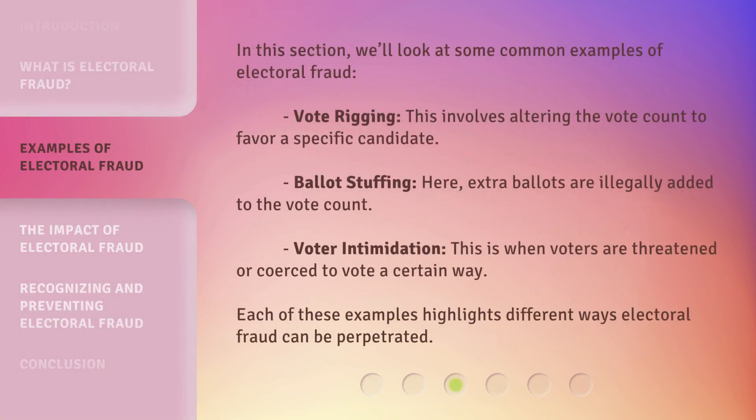In this section, we'll look at some common examples of electoral fraud. Vote rigging: this involves altering the vote count to favor a specific candidate. Ballot stuffing: here, extra ballots are illegally added to the vote count. Voter intimidation: this is when voters are threatened or coerced to vote a certain way. Each of these examples highlights different ways electoral fraud can be perpetrated.